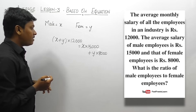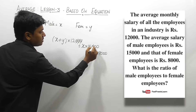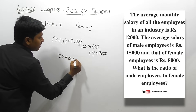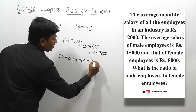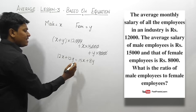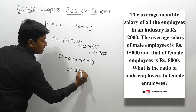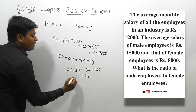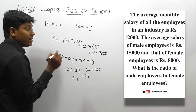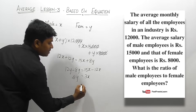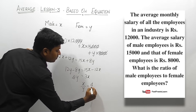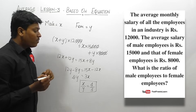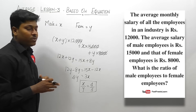Our target is to find the ratio of male to female. We can cancel the trailing zeros, giving 12x plus 12y equals 15x plus 8y. Rearranging: 12y minus 8y equals 15x minus 12x, so 4y equals 3x. Therefore x divided by y equals 4 divided by 3. Finally, the ratio of male employees to female employees is 4 is to 3.